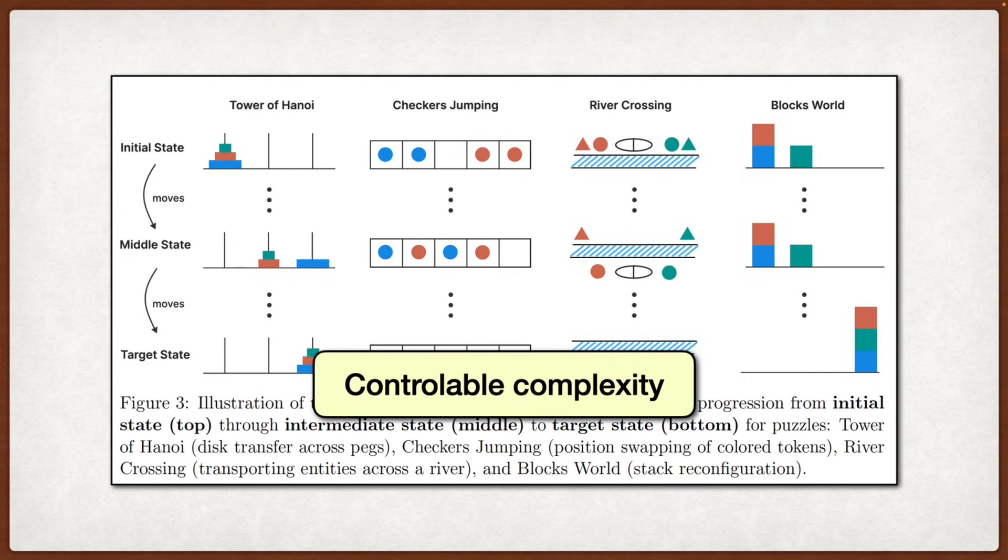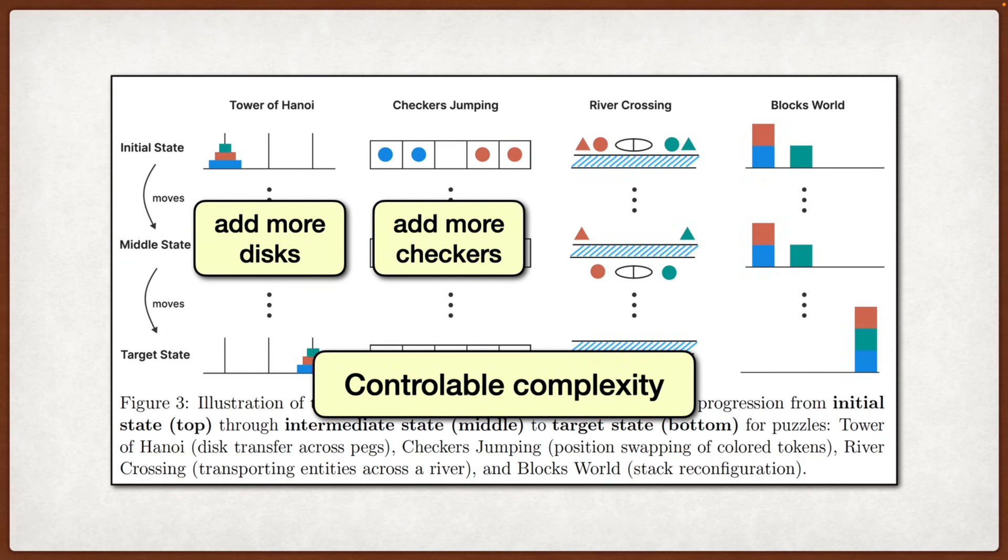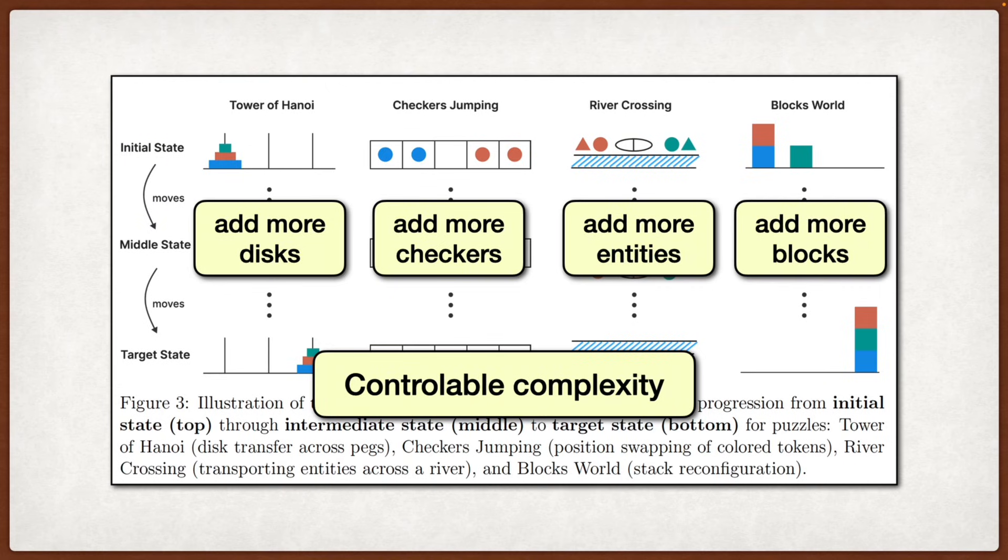What's interesting about using these puzzles is that you can systematically control their complexity. For Tower of Hanoi, you just add more disks. For checker jumping, you add more checkers and so on. And you can verify every single move with a deterministic simulator to check if the model is making valid moves or not.